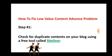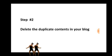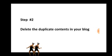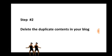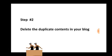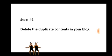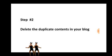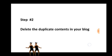Step two: delete the duplicate contents in your blog. Once you have discovered the duplicate contents on your blog, the next thing to do is to delete those contents. You can delete most of those contents to be on the safer side for Google AdSense to approve your website. Once you are done with step two, move over to step three.